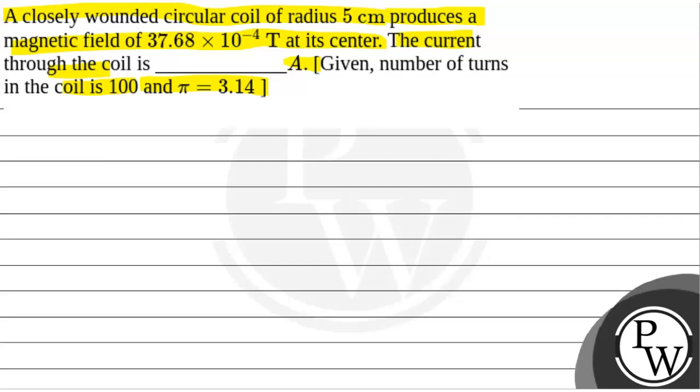We will solve this question. First, we will see the key concept that will be used. The key concept is magnetic field at center equals N μ₀ I by 2r. Here, μ₀ value is 4π × 10^-7 henry per meter. N is the number of turns, I is the current, and r is the radius.